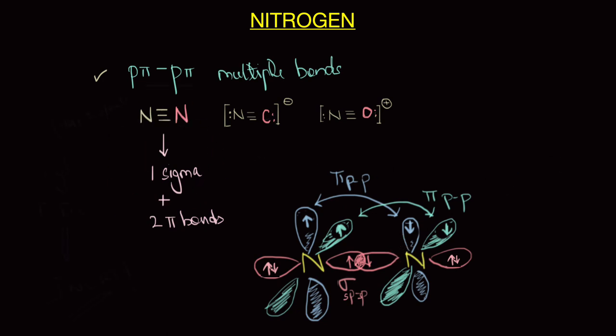And as a result of the strong p pi p pi bonding, its bond enthalpy is also very high. That is the bond enthalpy of diatomic nitrogen is very high and this is what makes nitrogen molecule inert at room temperature.